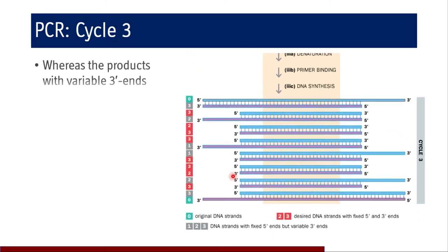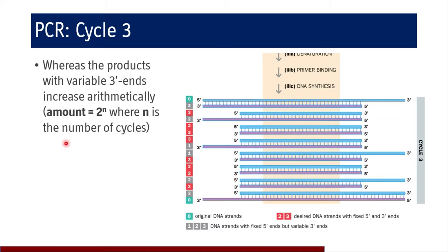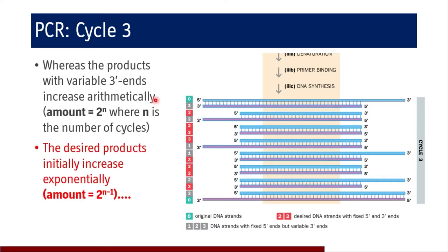Coming to cycle three, whereas the products with variable 3' ends increase arithmetically (amount = 2^n where n is the number of cycles), the desired product initially increases exponentially. Sequences not determined by primer at either 5' or 3' end will be excluded after running the PCR product in electrophoresis. At the end of PCR and subsequent electrophoresis, we get the product of interest where both ends are determined by the primer.